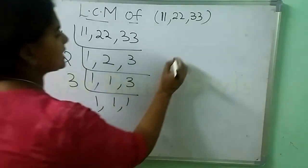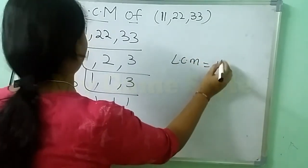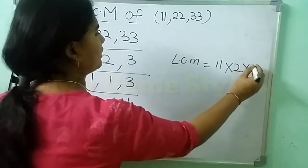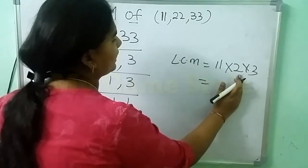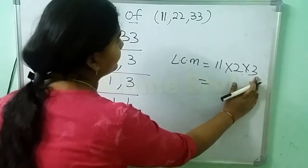Now what is this now? LCM is equals to 11 into 2 into 3. Now what was the answer? 11 times 2 is 22, 22 times 3 is 66.